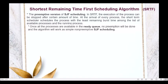To compute the average turnaround time, we need first to compute the turnaround time of each given process. And in order to compute the turnaround time, we need first to determine the completion time of each given process.